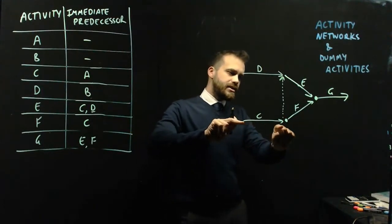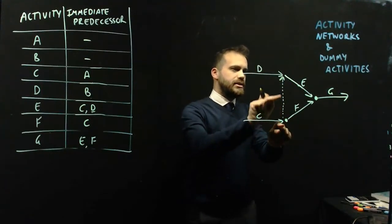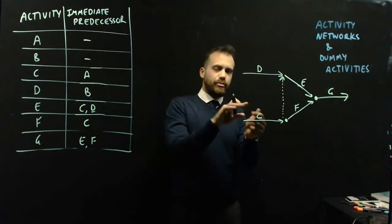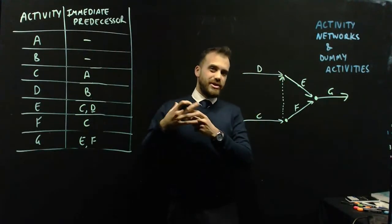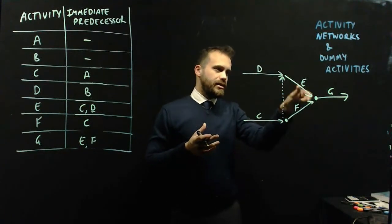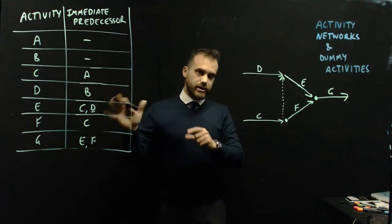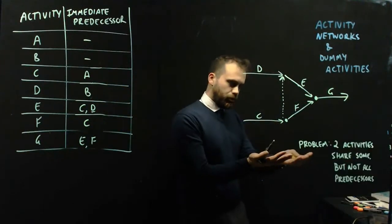So this is the line that's going to join C to E. It's like a pretend activity that takes zero amount of time that happens between C and E. And it allows us to get around this problem.